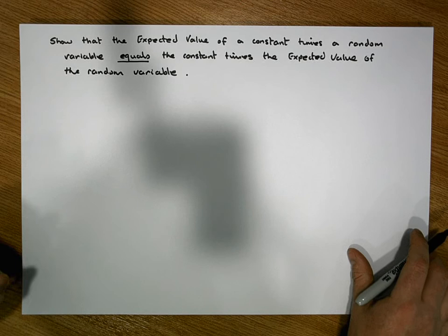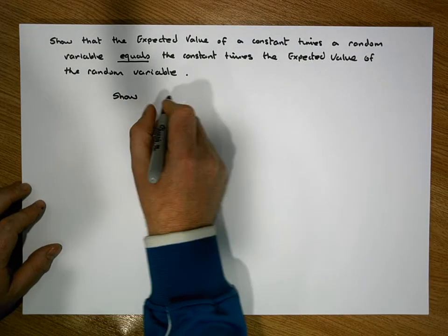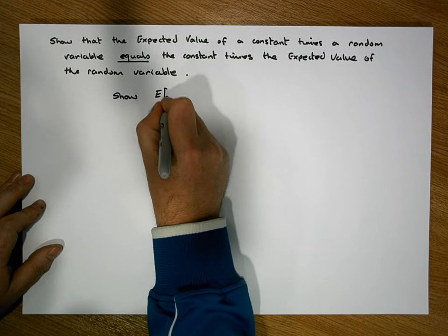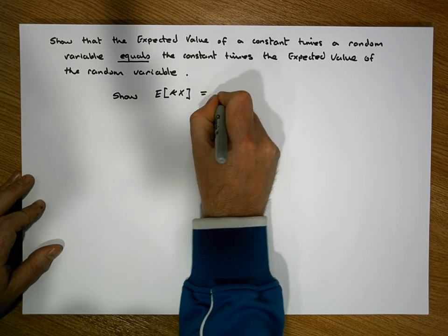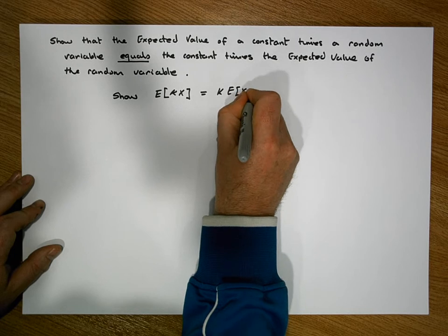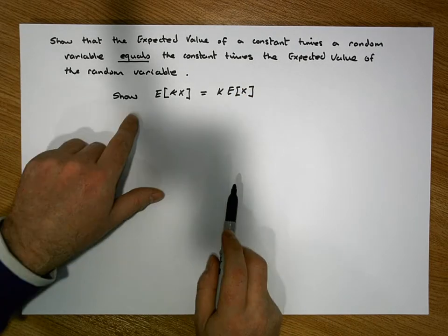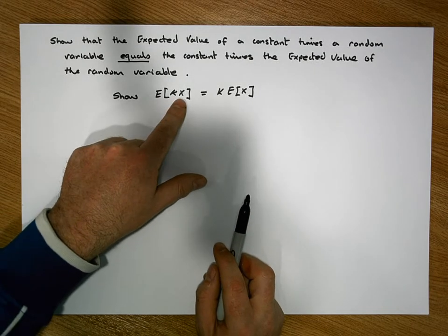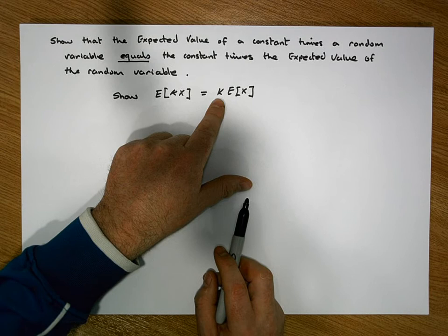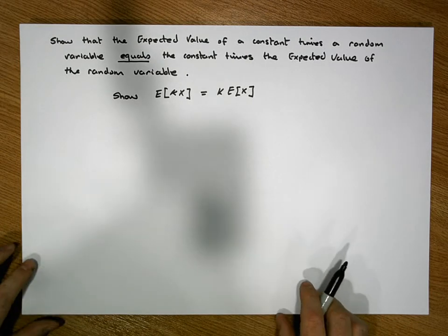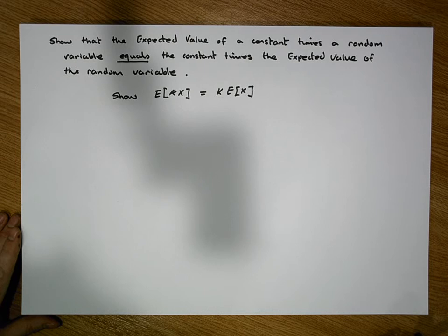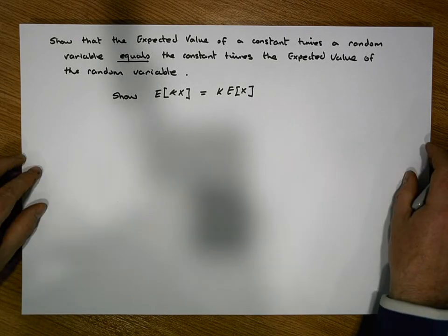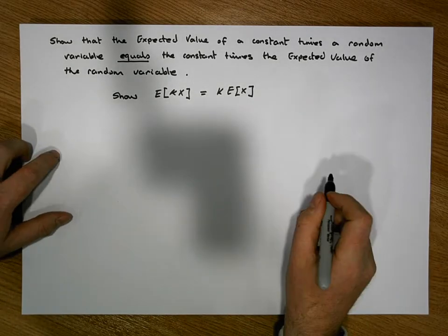What is it that we really want to show? Let's try to encapsulate this mathematically. So what we'd like to show is that the expected value of k times a random variable is the same as k times the expected value of the random variable. This is an important identity because we're going to rely upon it later when it comes to showing that the sample variance is an unbiased estimator of the population variance, and in other cases as well. Albeit the proof is actually quite straightforward.